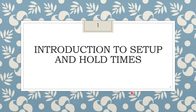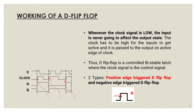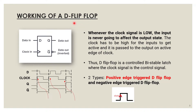Let us start with the basic working of a simple D flip-flop. A flip-flop is a fundamental block in sequential circuits that has two stable states, logic 0 and logic 1, and can store 1-bit binary data. A D flip-flop has one data input D, a clock input, and Q and Q-bar as outputs. The function of a D flip-flop is to operate only at the positive edge or negative edge transition of a clock.